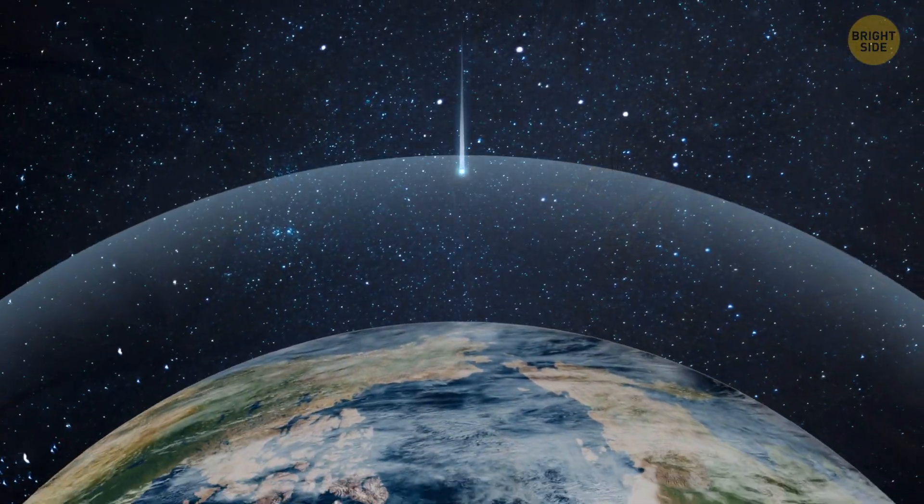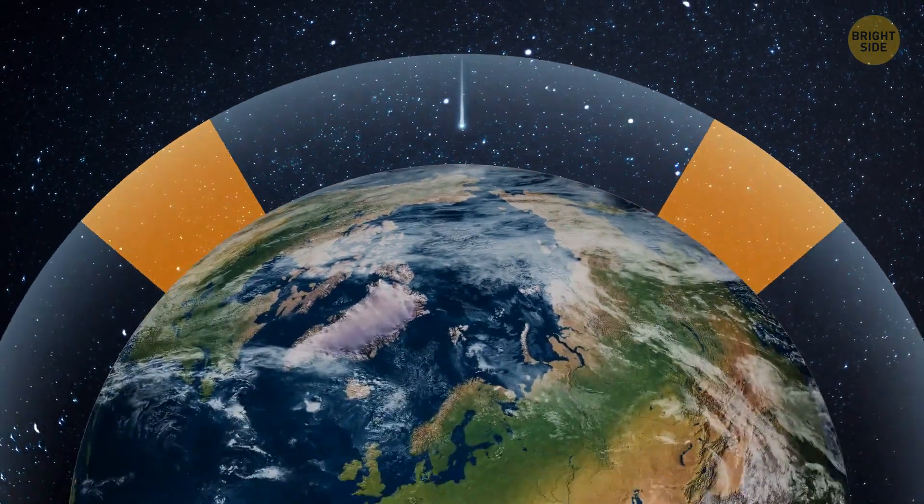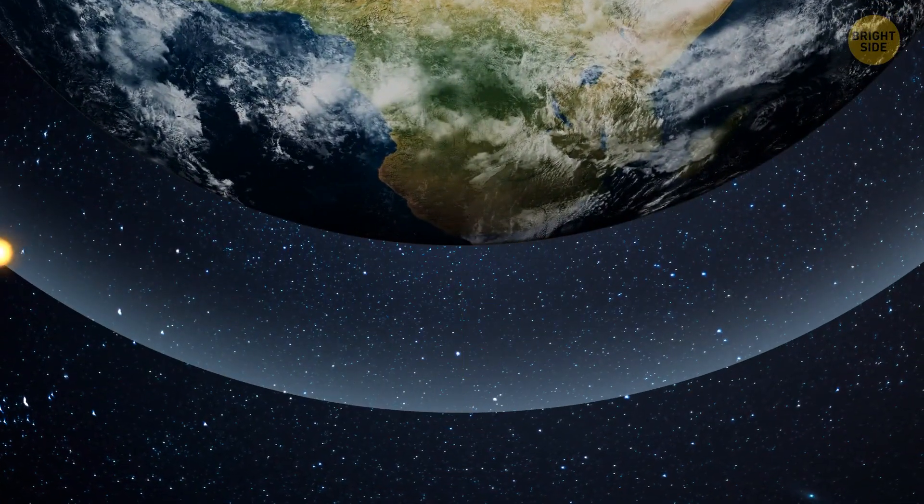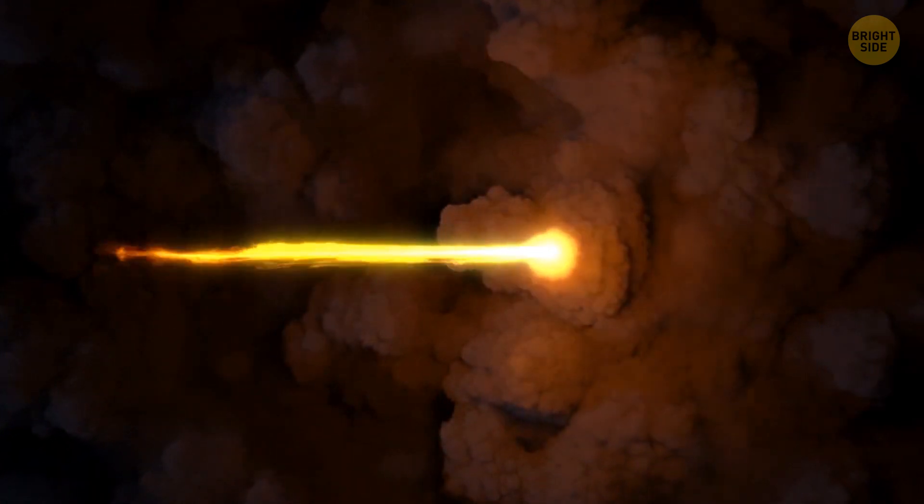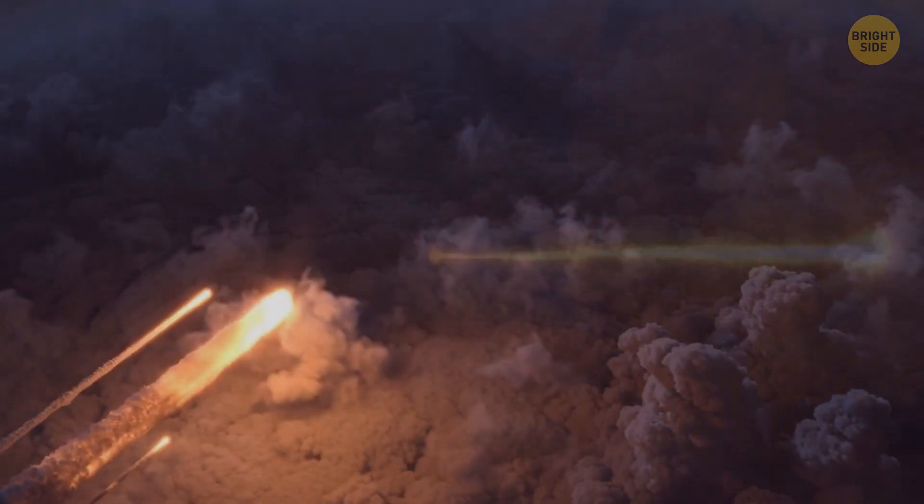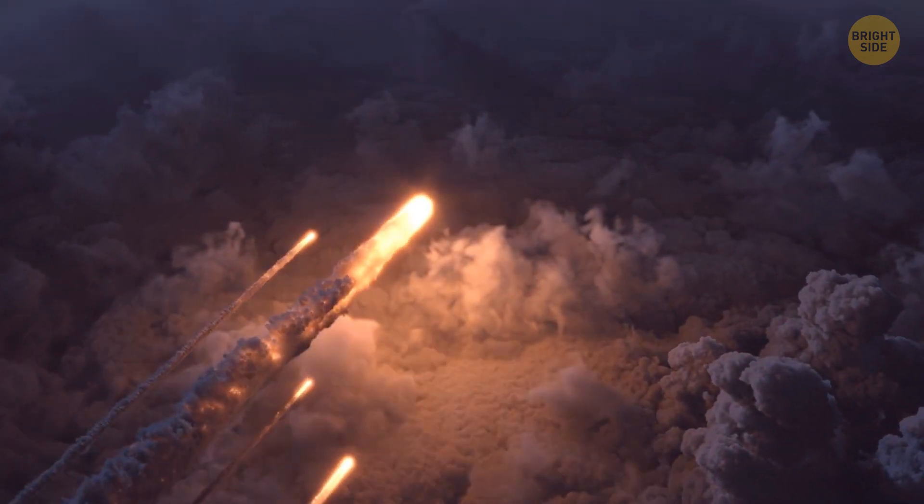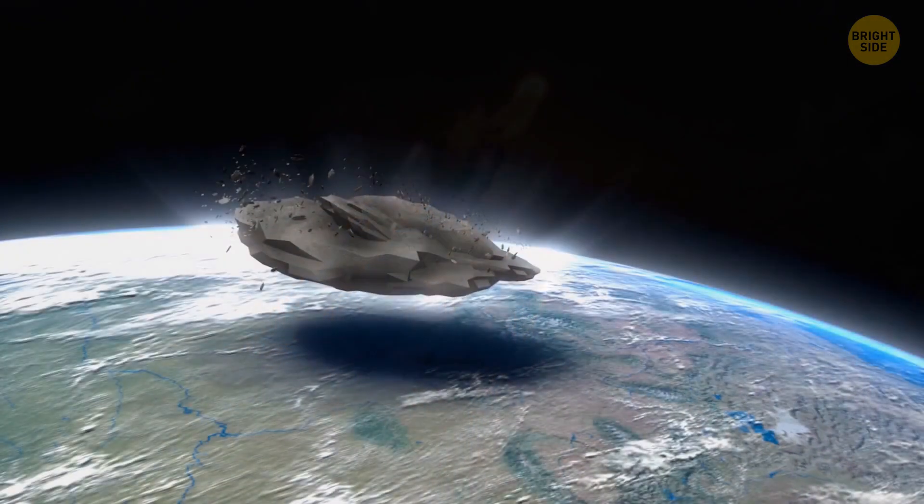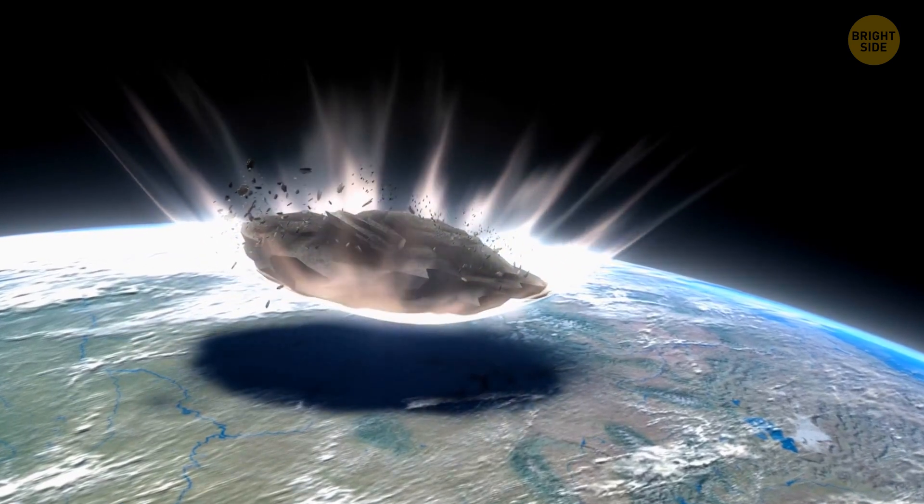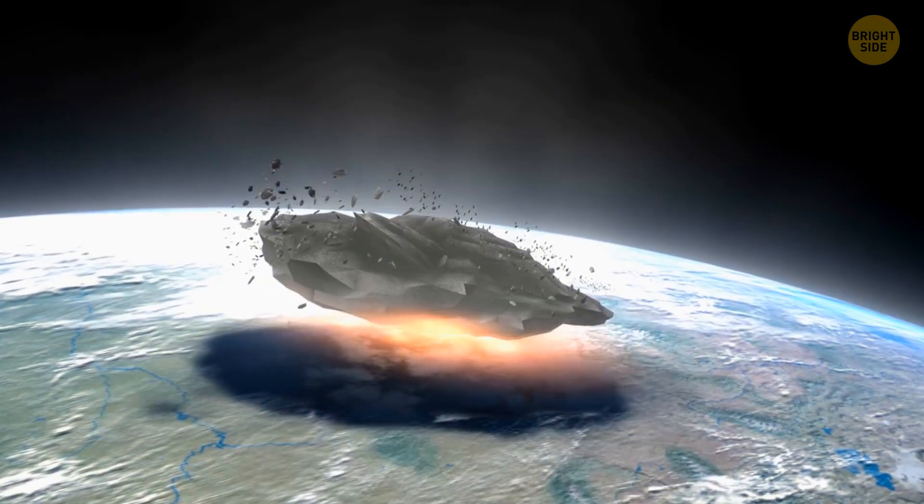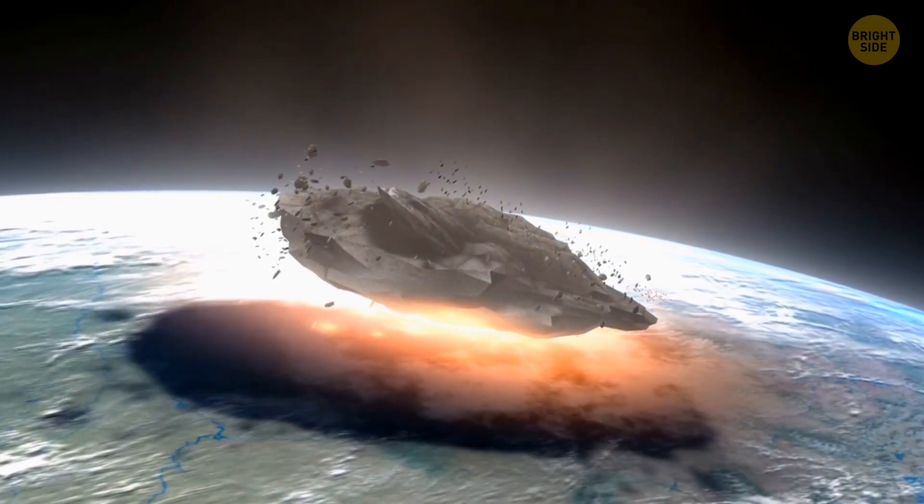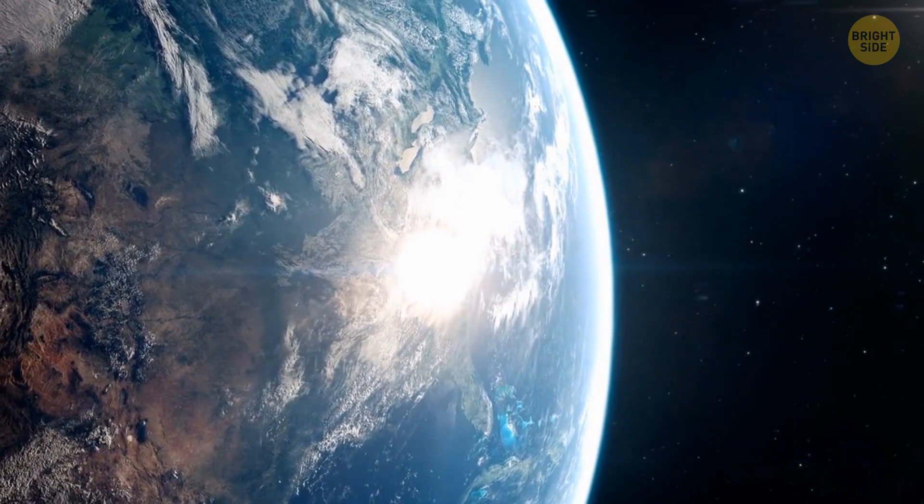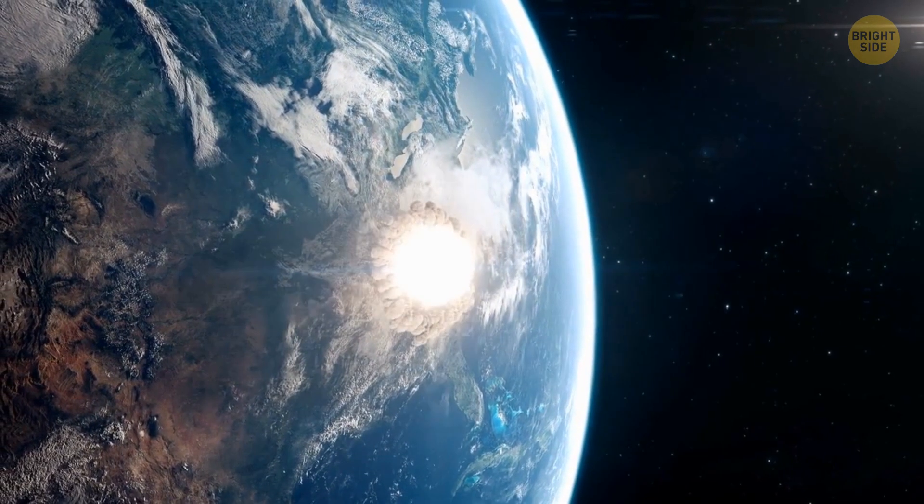When the comet entered the atmosphere, it'd produce a booming sound so loud you'd hear it on the other side of Earth. At this point, the comet would begin to heat up because of friction with the air. It'd start burning. Countless pieces of debris would break away from the main body of the meteorite and fall to Earth. As soon as Bernardinelli Bernstein touched the surface of the planet, we'd see a flash so bright it'd outshine the sun. In a fraction of a second, a colossal amount of energy would be converted into heat. This would create the most powerful explosion in the history of our planet.